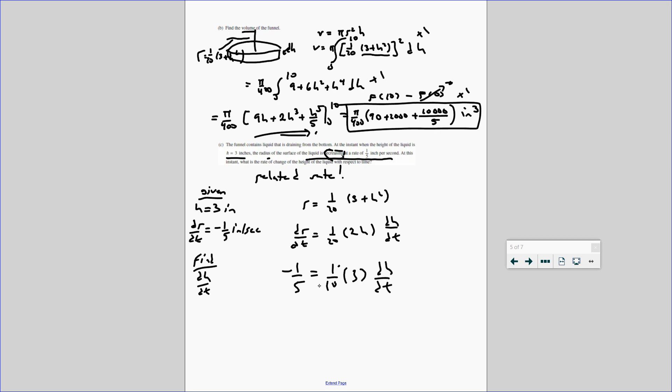And I just solved this. And if you solve this, you get dh/dt equals negative 2/3. And that will be inches, because change in height is in inches, change in time is in seconds. And then we can write our answer. The height is decreasing at a rate of negative 2/3 inches per second.